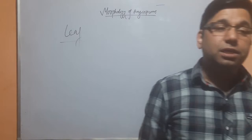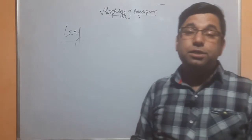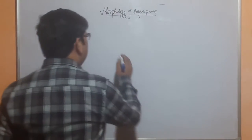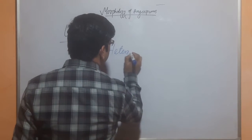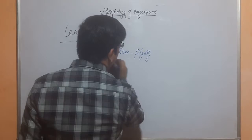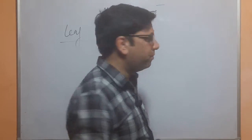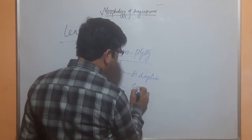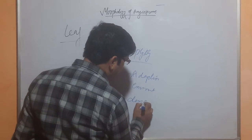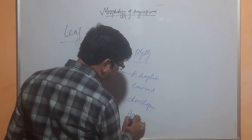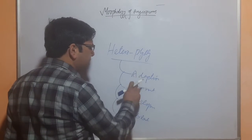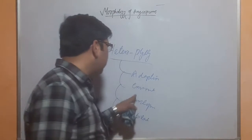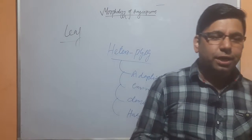There is a phenomenon called heterophylly, where different types of leaves are present on a single plant. Hetero means different, phylly means leaves — so different types of leaves on a single plant. There are four important reasons for this: adaptive heterophylly, environmental heterophylly, developmental heterophylly, and habitual heterophylly.